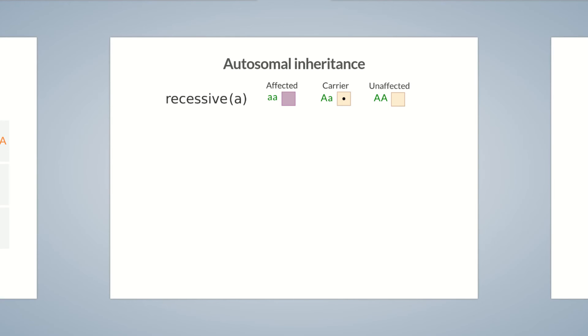If one parent is unaffected but the other is either a carrier or affected, then none of the children will be affected. This is because the dominant allele from the healthy parent is always expressed in the phenotype. However, there's a 50% chance that each child of a carrier is also a carrier. Children of an affected parent are always carriers.